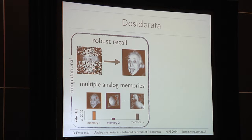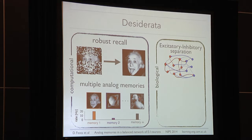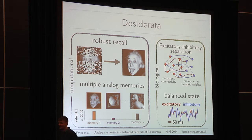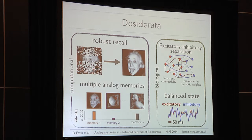We now move to biological features observed experimentally in real neurons. One thing is that neurons are either only excitatory or only inhibitory in their inputs. This is known as Dale's law, and it means populations are separated between excitation and inhibition. Additionally, neurons are recurrently connected and memories are stored in the weights — the connections between neurons. Finally, the dynamical regime is the balanced state, meaning neurons have very high excitatory and inhibitory input and are driven by the net difference between the two. This is used to explain the spiking regime observed in vivo.